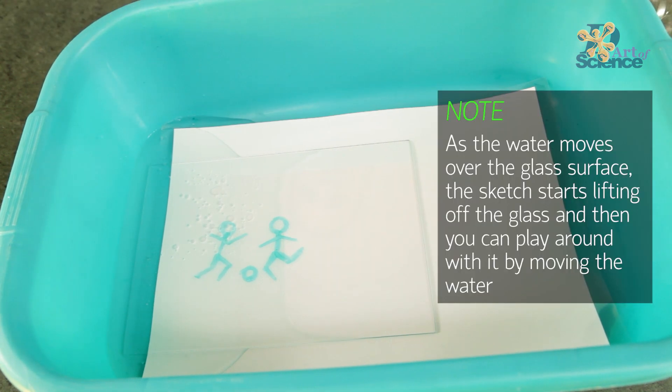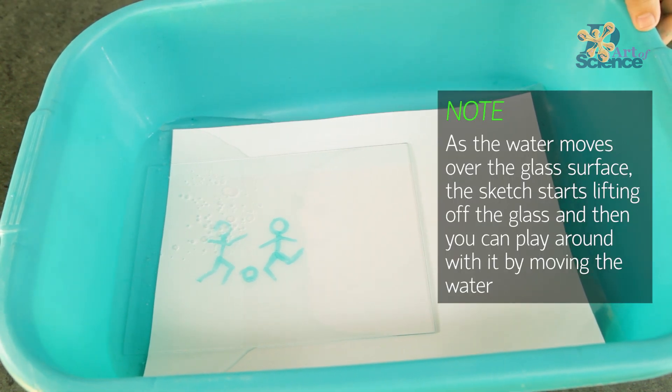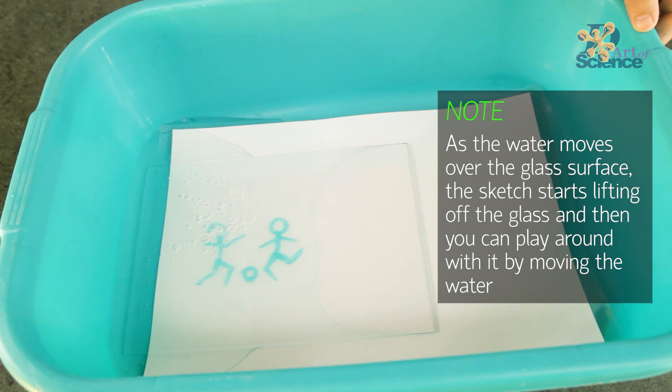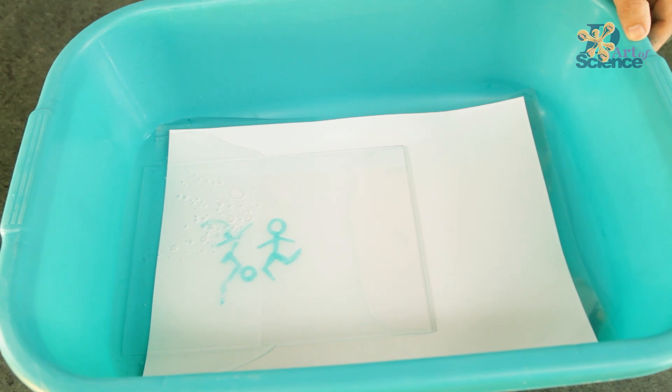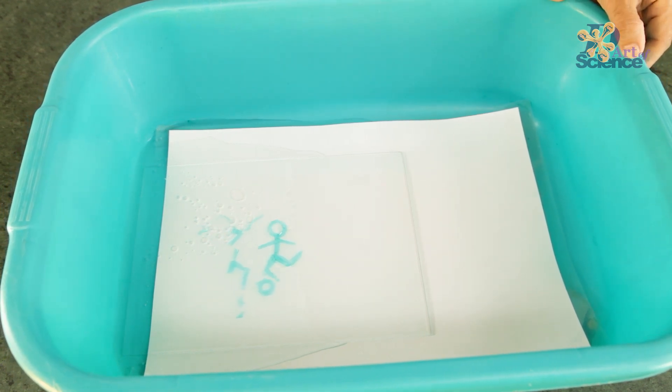like alcohol and an oily silicon polymer which makes the ink slippery and prevents it from sticking on glass. Now this allows the water to slip underneath and help the ink float on top of the water.